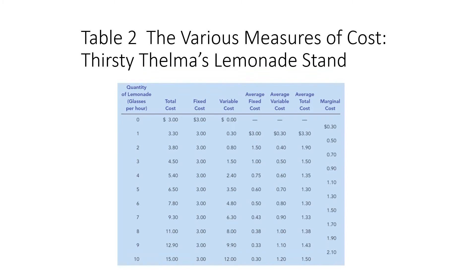We have a table as an example showing the quantity of lemonade glasses produced per hour. We will calculate total cost, fixed cost, variable cost, averages, and marginal cost. When producing zero glasses, we have a total cost of 3, which is the summation of fixed cost plus variable cost.